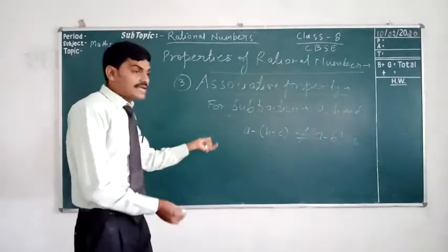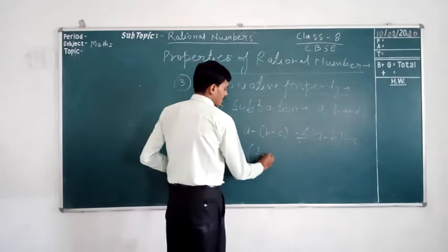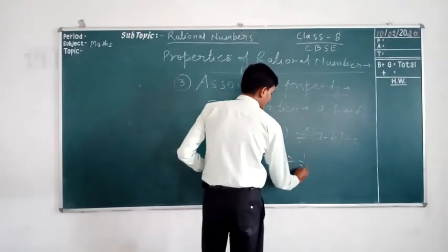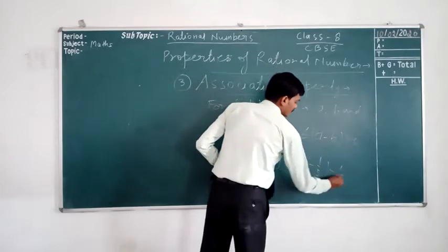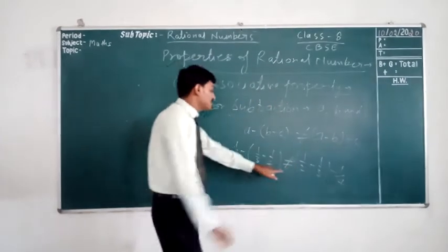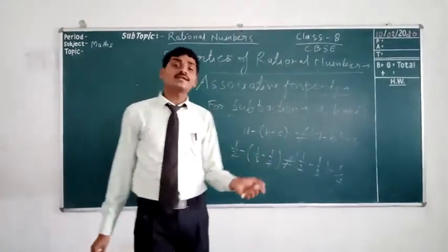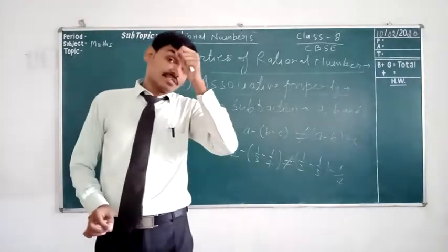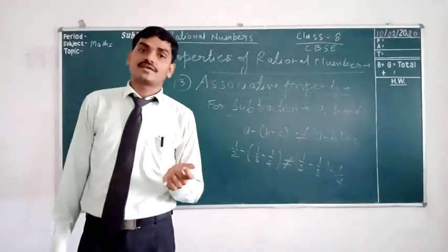Let's take an example: (1/2 − 1/3) − 1/4 and 1/2 − (1/3 − 1/4). We will not get the same answer — it is not equal. After solving, you will get that the answers will not be the same. So we can say that rational numbers are not associative for subtraction.